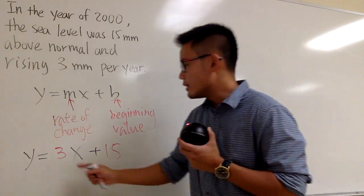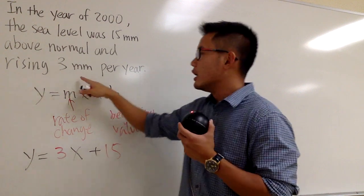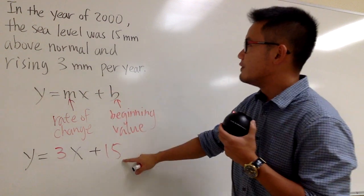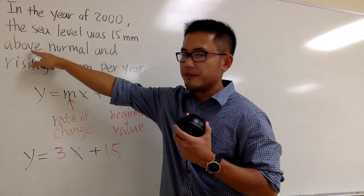And however, I want to mention, this 3 is positive because it says it's rising 3 millimeters per year. And the 15 is also positive because it was above the normal.